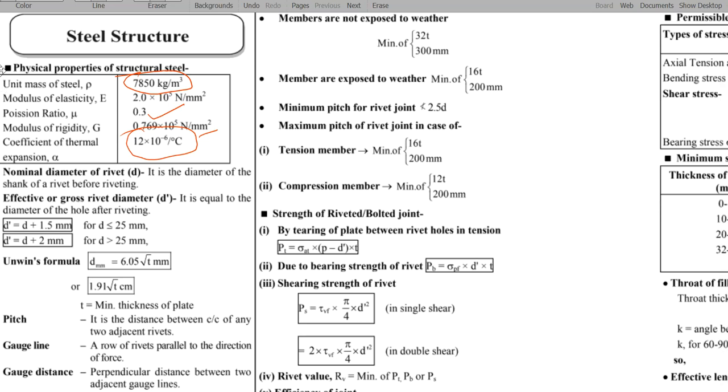Another important is nominal diameter versus effective or gross rivet diameter major difference. Nominal diameter, we say, it is the diameter of the shank of a rivet before riveting. So, in the riveting process, this is the diameter of the shank of a rivet. This is the nominal diameter. Now, if you examine the exam, if they examine the nominal diameter of 20 mm, what is the gross diameter or the rivet hole diameter?